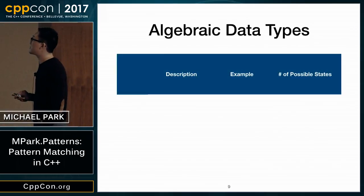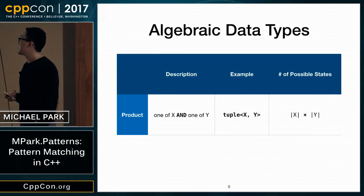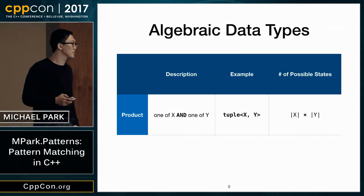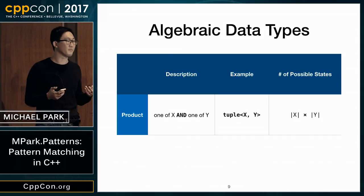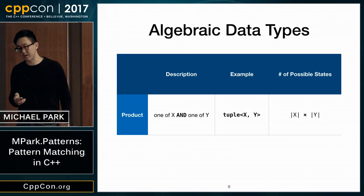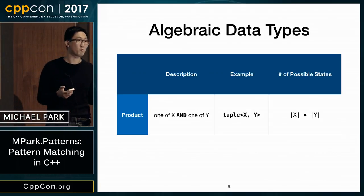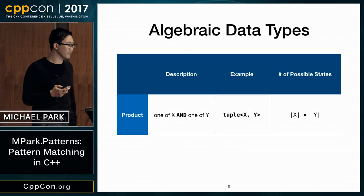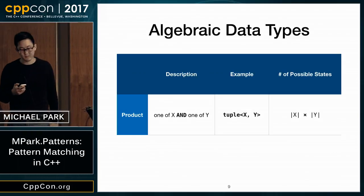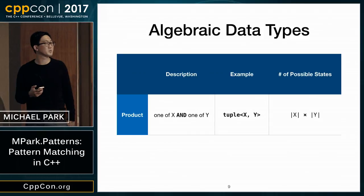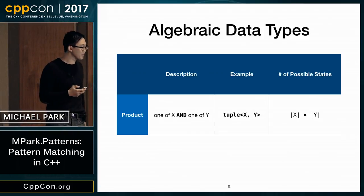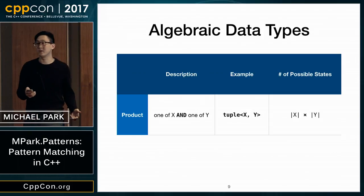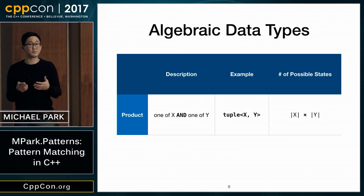Algebraic data types come in two forms. The first is a product type — a data type composed of multiple data types, holding an instance of all of them. A tuple<X, Y> stores an instance of X and Y. The name 'product' comes from counting possible states: a tuple<X, Y> can be in X-states times Y-states.